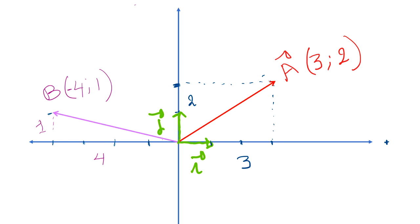The polar coordinate of vector A will have R, which is the resultant vector we are looking for, and the direction of this vector from x positive. This is our x positive, and this is the direction of your vector A from x positive. To find the magnitude R, we use the Pythagorean theorem.